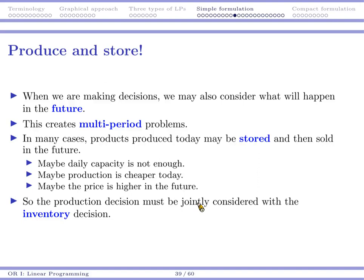Okay, so our next example is about production and some kind of storing or inventory decision. When we are making decisions, in many cases we may also consider what will happen in the future.